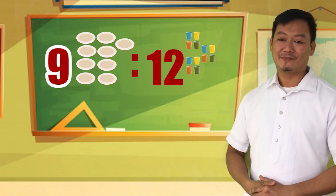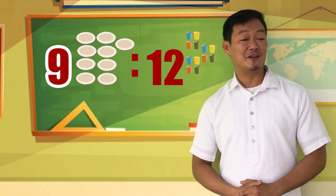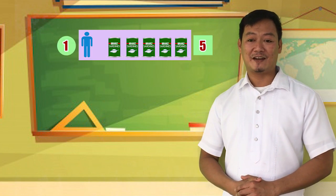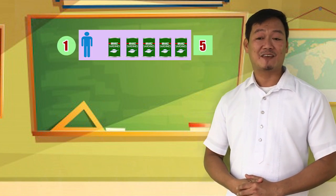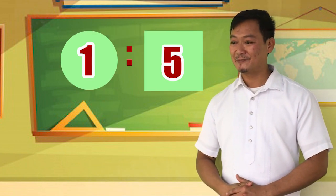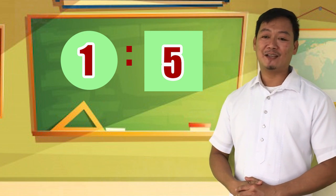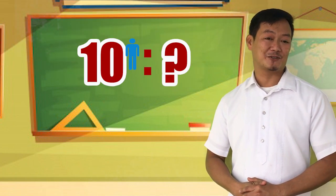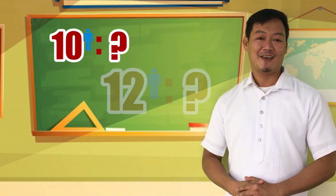Earlier, we used pictures to understand the concept of ratio and proportion. That is, one person is to five cans of sardines or simply one to five. At this rate, how many cans of sardines will 10 persons receive? How about 12?